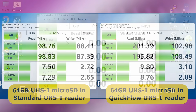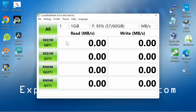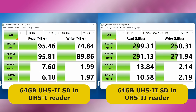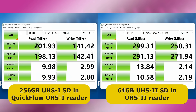Moving on, let's test the 64 GB UHS-2 card in both the UHS-1 only reader and the UHS-2 reader. The test shows a big difference between UHS-1 and UHS-2, with UHS-2 delivering more than three times the read and write performance and beating all previous results. That said, UHS-2 cards are far more expensive, with UHS-1 Quickflow cards and a compatible reader offering the best price-performance ratio in most application scenarios.